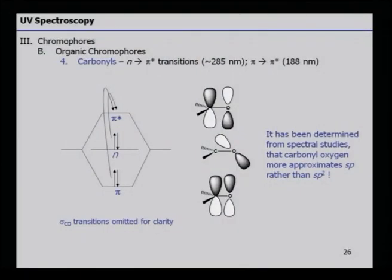Looking further at organic chromophores, carbonyls show both n to pi* and pi to pi* transitions. It has been determined from spectral studies that carbonyl oxygen is more sp-like than sp2. In a carbonyl, it is possible to have two jumps: one is pi to pi* and the other is n to pi*. These are the various transition options that take place in an organic carbonyl chromophore.